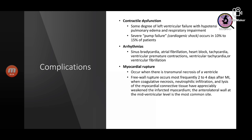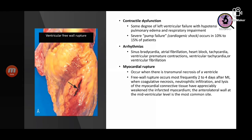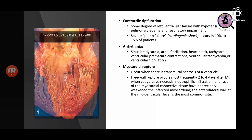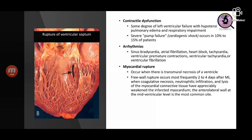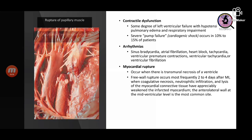Free wall rupture most commonly happens 2 to 4 days after MI, after which coagulative necrosis causes considerable damage to the myocardial tissue and the myocardium becomes very weak. The most common site for ventricular rupture is the ventricular free wall, but there may also be rupture of the septum depending on which area is most infarcted, or rupture of the papillary muscles.